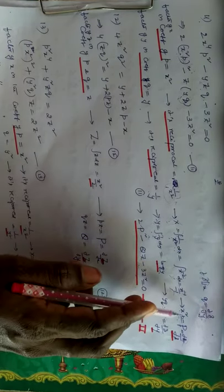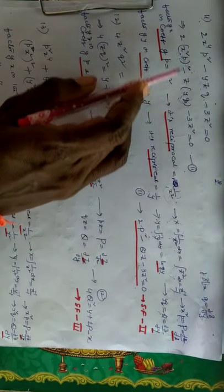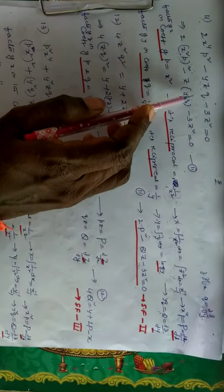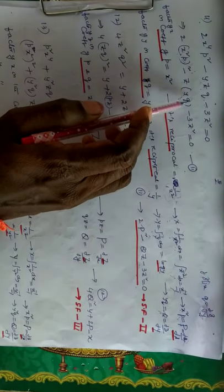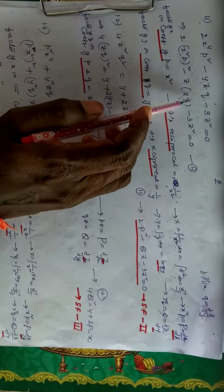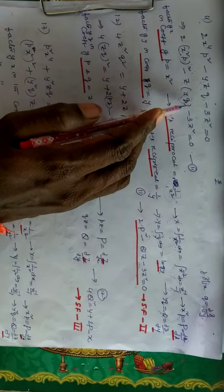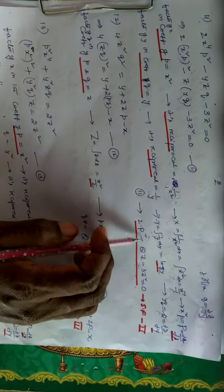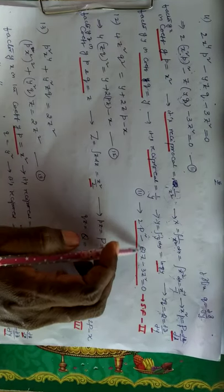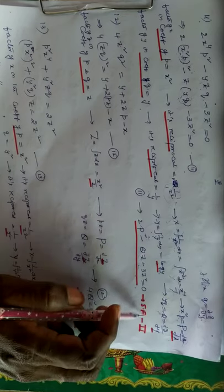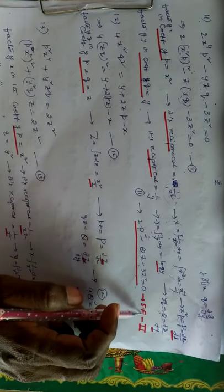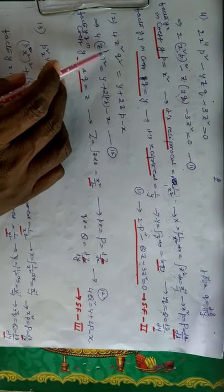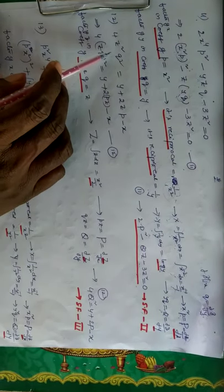By substituting x²p = capital P and yq = capital Q, the given PDE is reduced to a form containing P, Q, and z only. So it belongs to standard form 2. Next, we go to another problem.